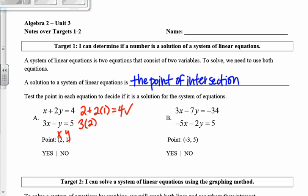3 times 2 minus 1, that's 6 minus 1, that is 5. Since (2, 1) makes for a true statement in both these equations, that means that is the point of intersection—that is the solution to this system.